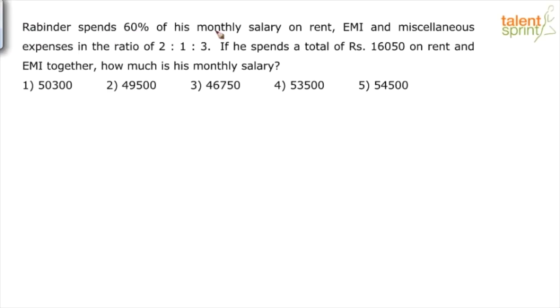Rabindar spends 60% of his monthly salary on rent, EMI, and miscellaneous expenses in the ratio of 2:1:3. If he spends a total of Rs. 16,050 on rent and EMI together, how much is his monthly salary?